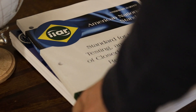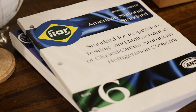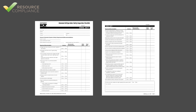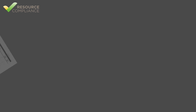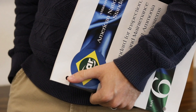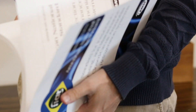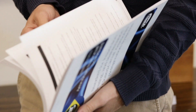The checklists contained in IIAR 6 Appendix B are derived from a legacy document named IIAR Bulletin 109. For years, the Bulletin 109 checklists, or B109s, served as the gold standard for documenting annual mechanical integrity inspections for ammonia refrigeration equipment. In 2019, IIAR retired Bulletin 109 when the first edition of Standard 6 was published.